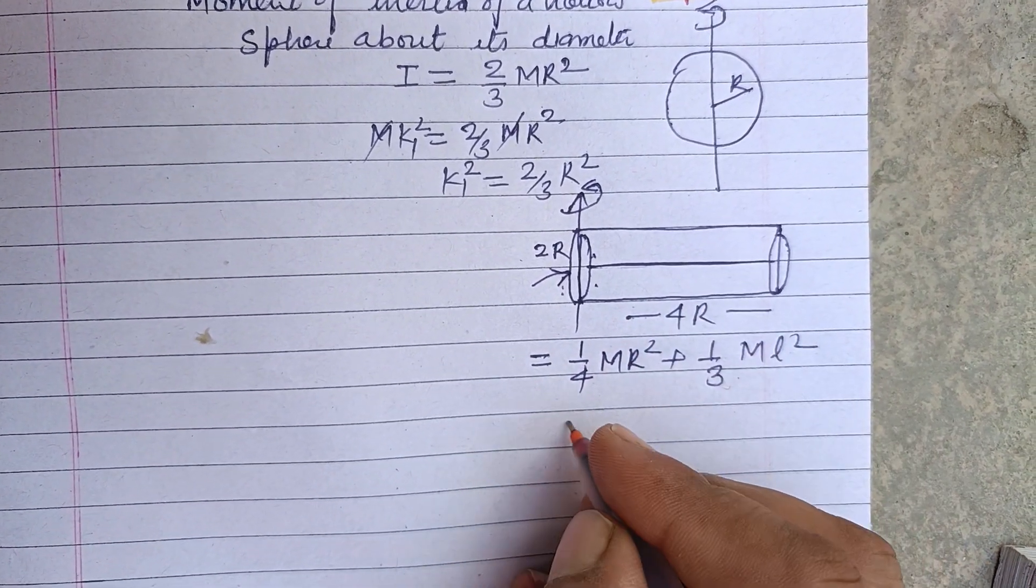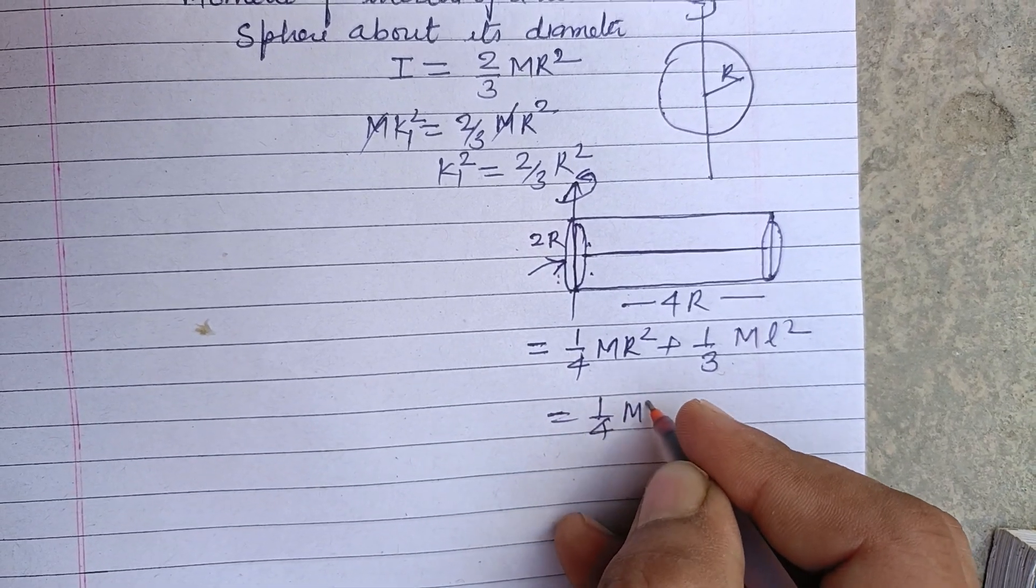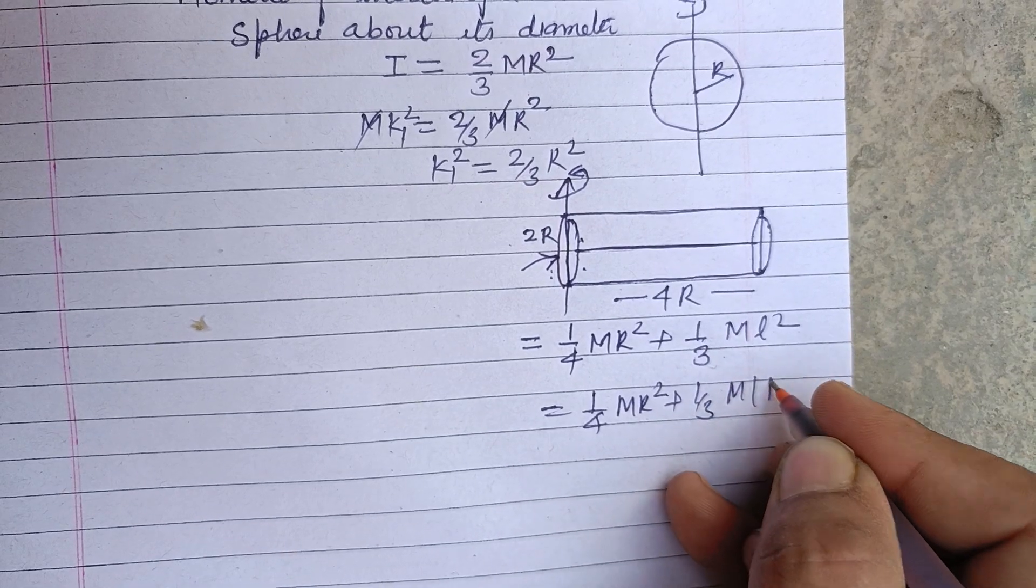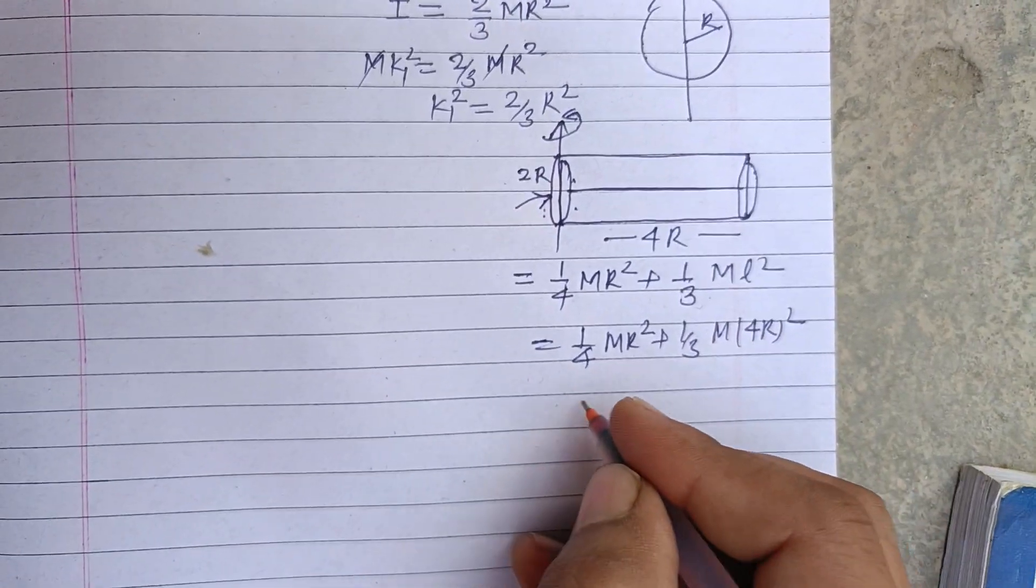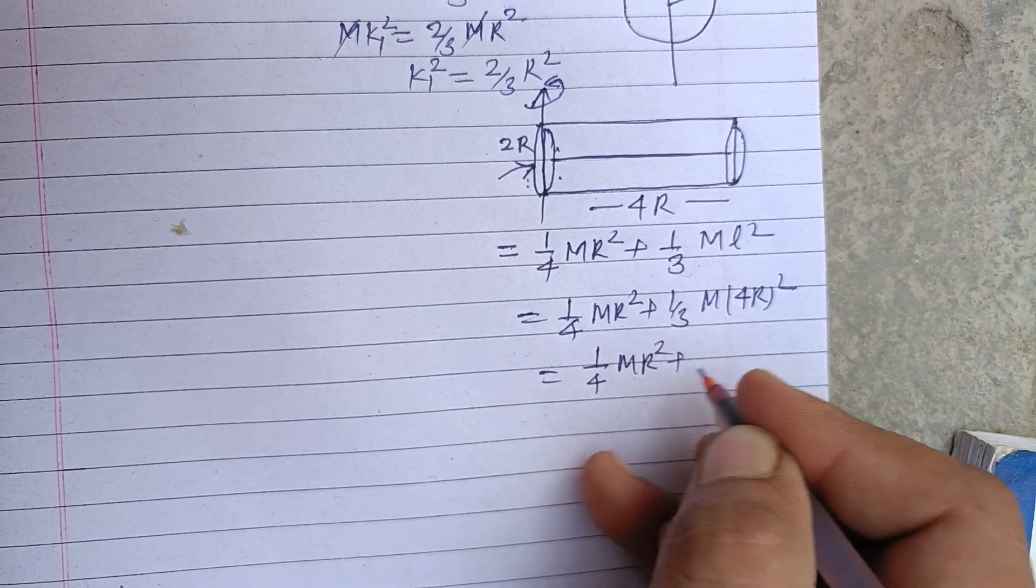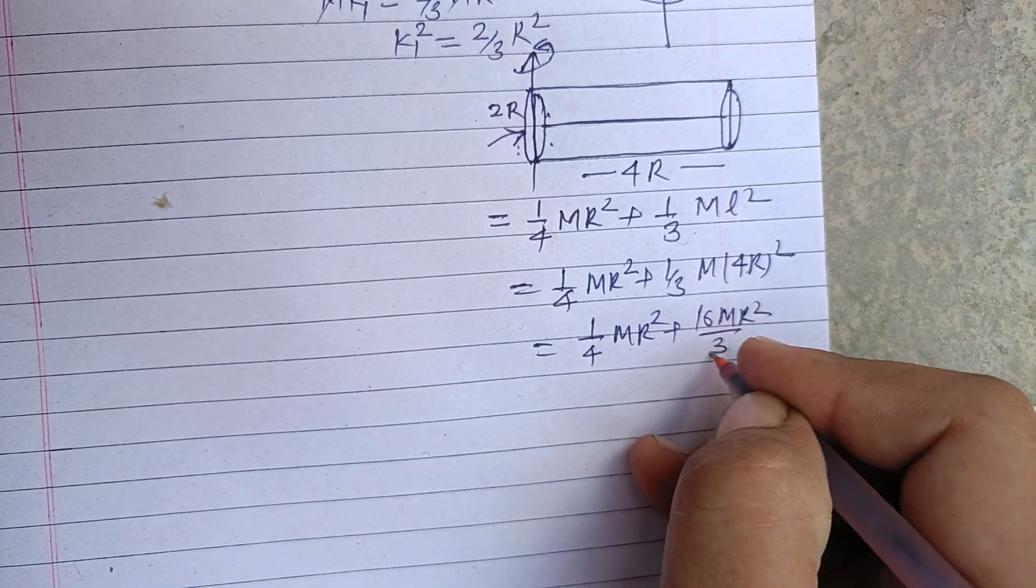Here L is 4R, so 1/4 mR² plus 1/3 m(4R)². Therefore we get 1/4 mR² plus 16mR²/3.